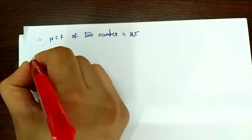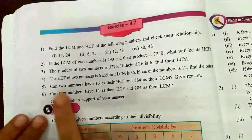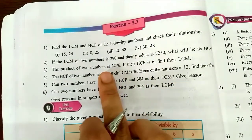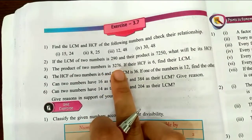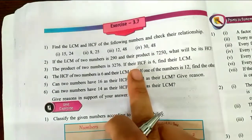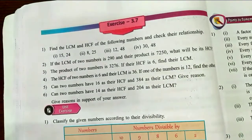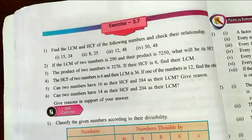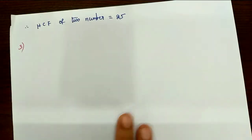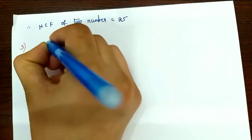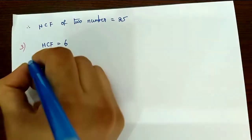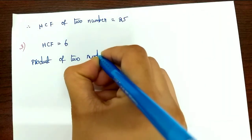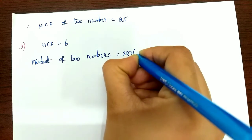Next, we have the 3rd problem. The product of two numbers is 3276. The 2nd problem was to find the HCF; the 3rd problem is to find the LCM — same model, same formula. Given: HCF is 6, and the product of two numbers is 3276.